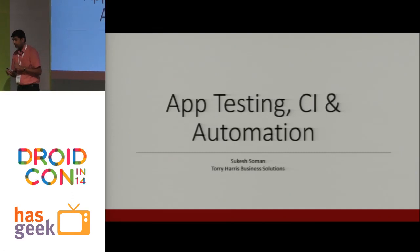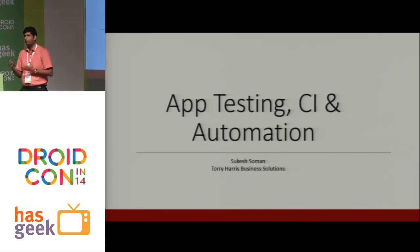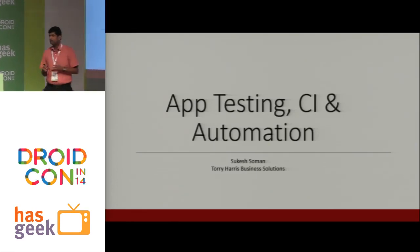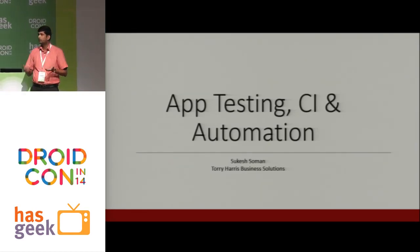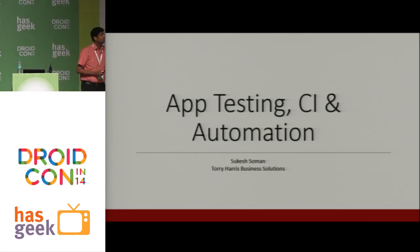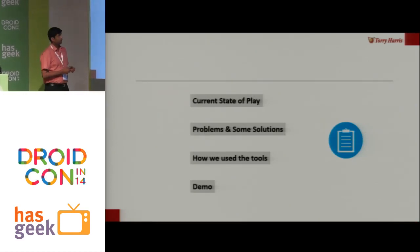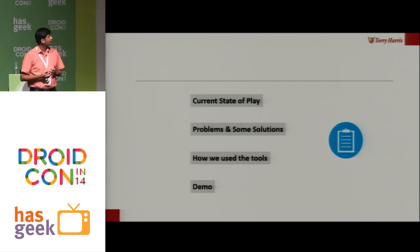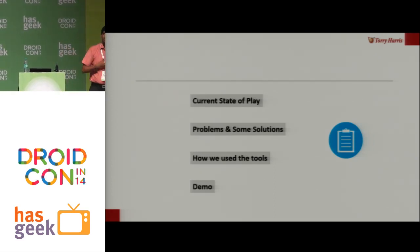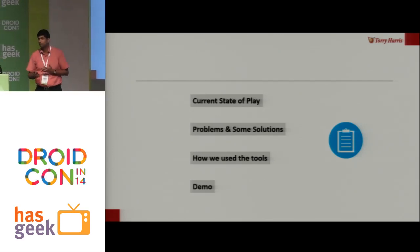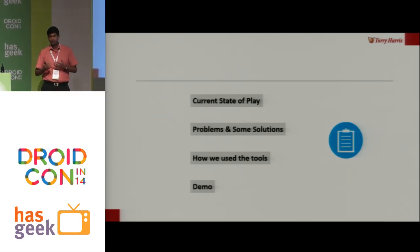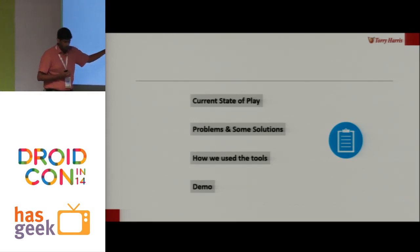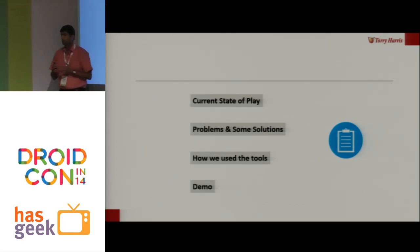Before I start, I just want to know how many people have actually tried automating something in their app delivery process. Very few. I'm hoping that there would be something in it for you guys to take back and try out within your delivery process. We'll look at the current state of play in terms of how app delivery is happening, some major issues in app development, common problems, solutions using open source tools, and we'll wind up with a quick demo if time permits.